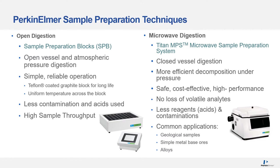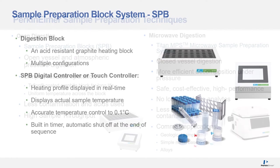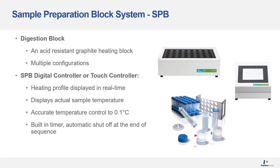The Titan microwave digestion system is used for closed vessel digestion at high pressure and is able to digest difficult sample types. Advantages include no loss of volatile analytes and less contamination from the working environment. It is ideal for geological samples and metal-based ores. The sample preparation block offers an acid-resistant graphite block in a variety of configurations, operating with either a digital or touch controller. The controller can set heating temperature accurate to 0.1 degrees, and also displays actual sample temperature, setup, and shutdown times.